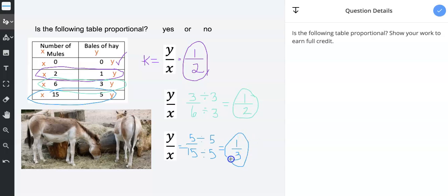And one third equals 0.3 repeating. So we put a line over to show it goes on forever. One half equals 0.5. So these unit rates are different.